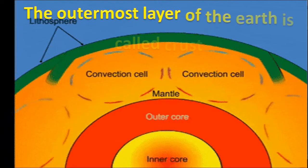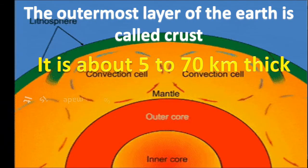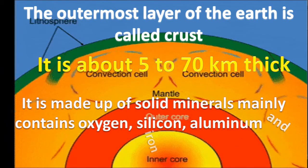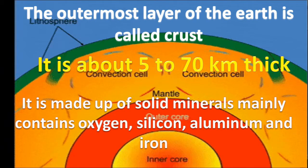The outermost layer of the earth is called crust. It is about 5 to 70 km thick. It is made up of solid minerals and mainly contains oxygen, silicon, aluminium, and iron.